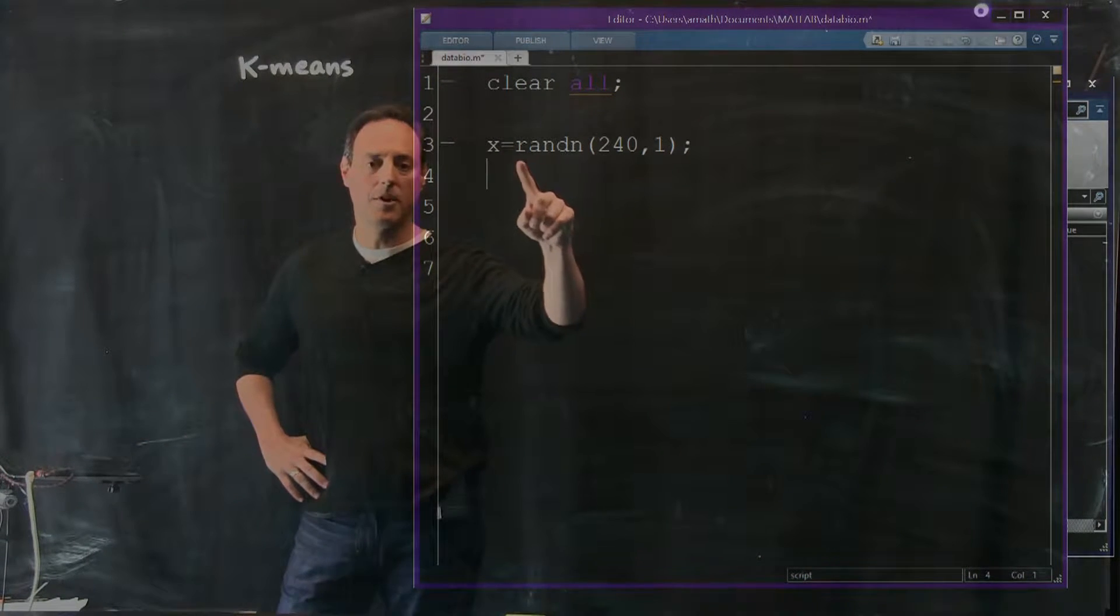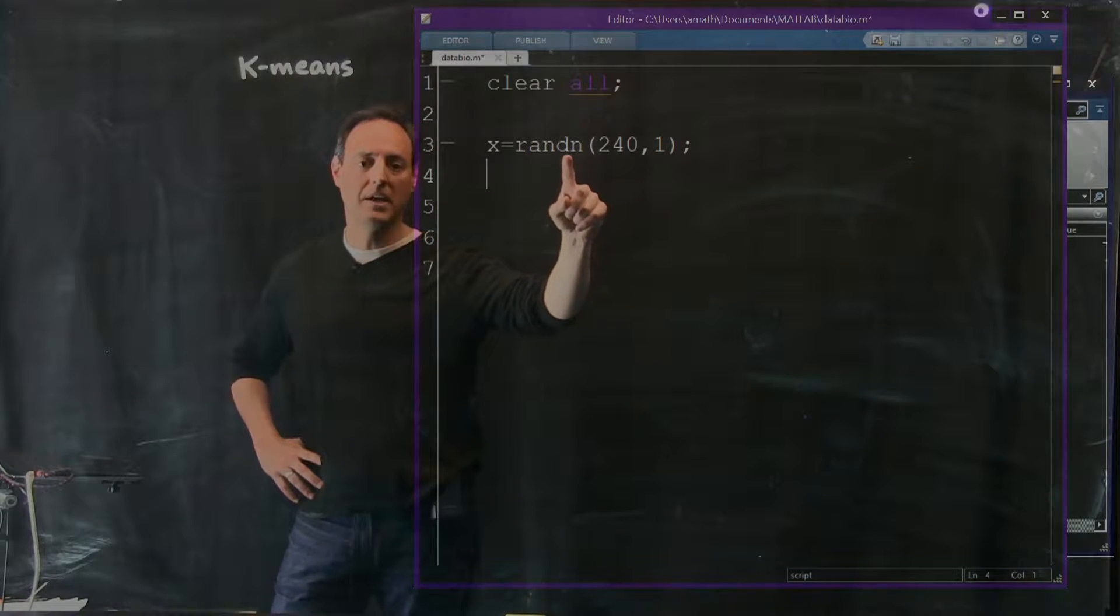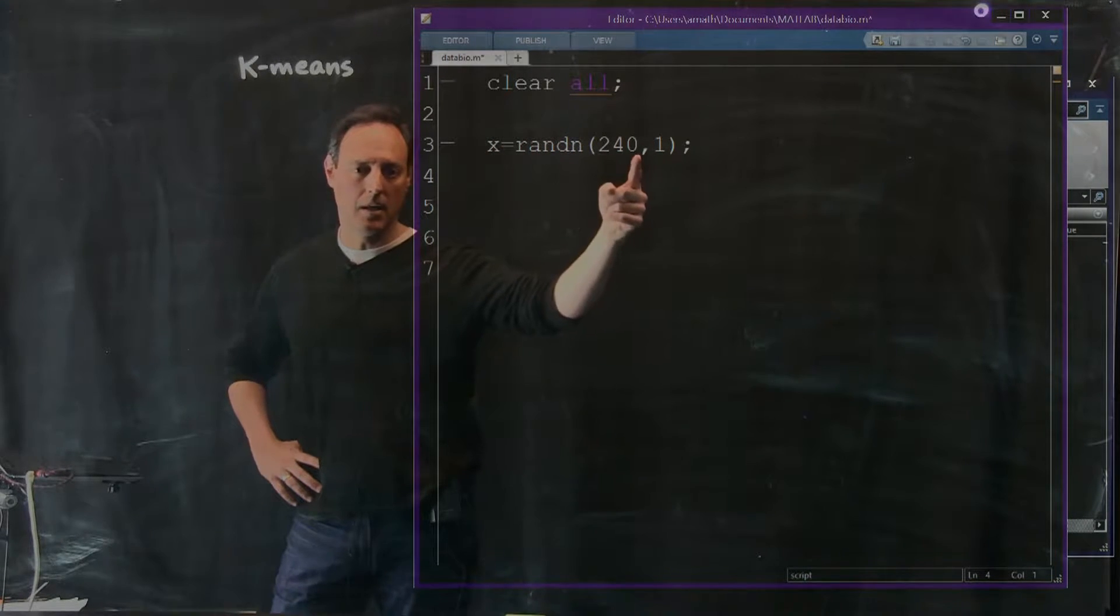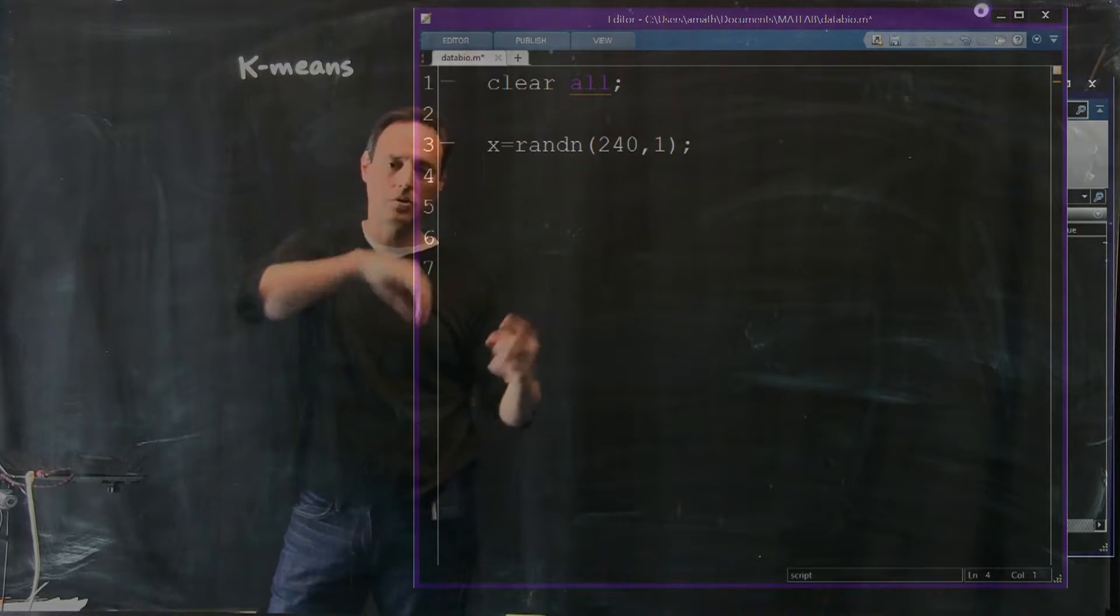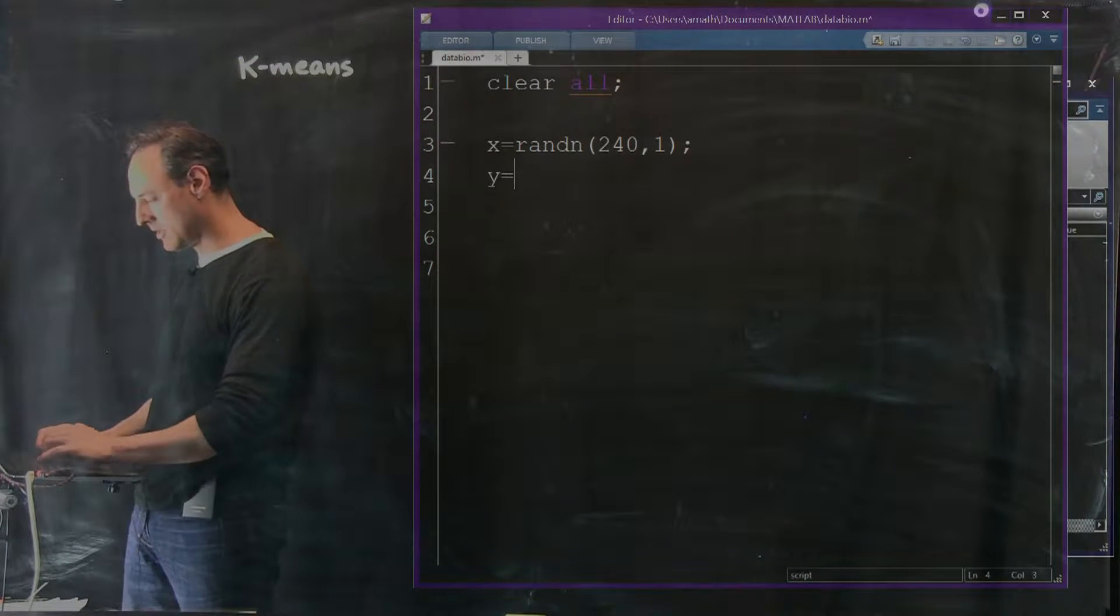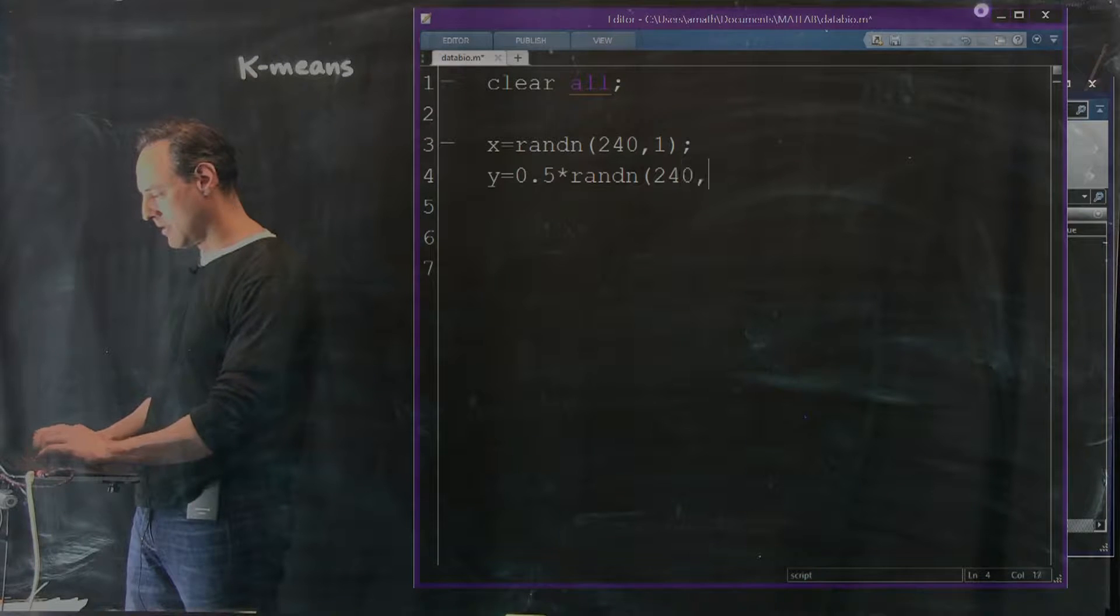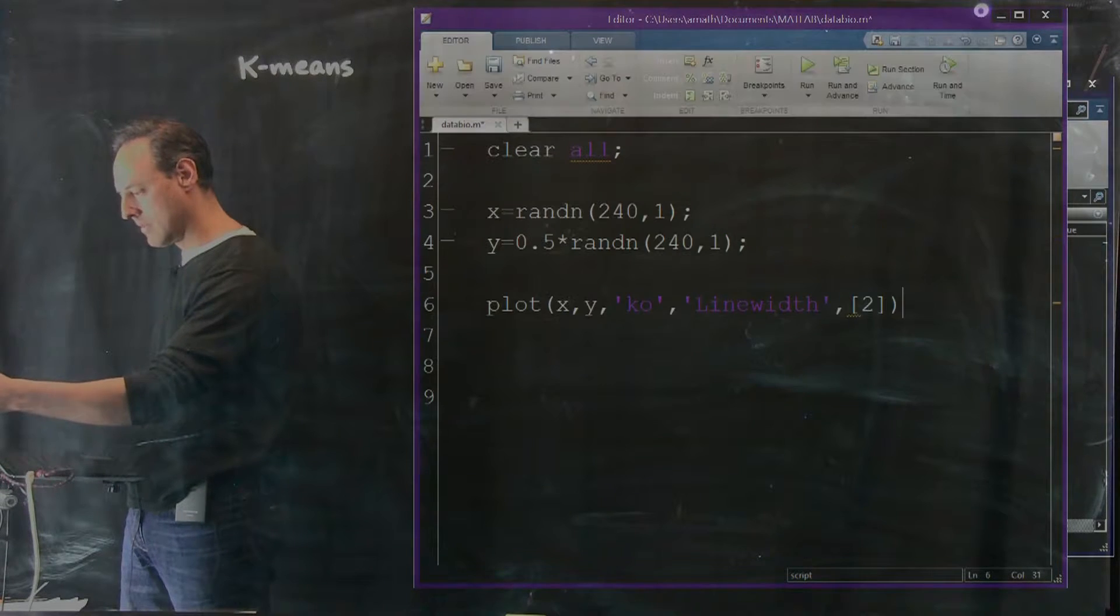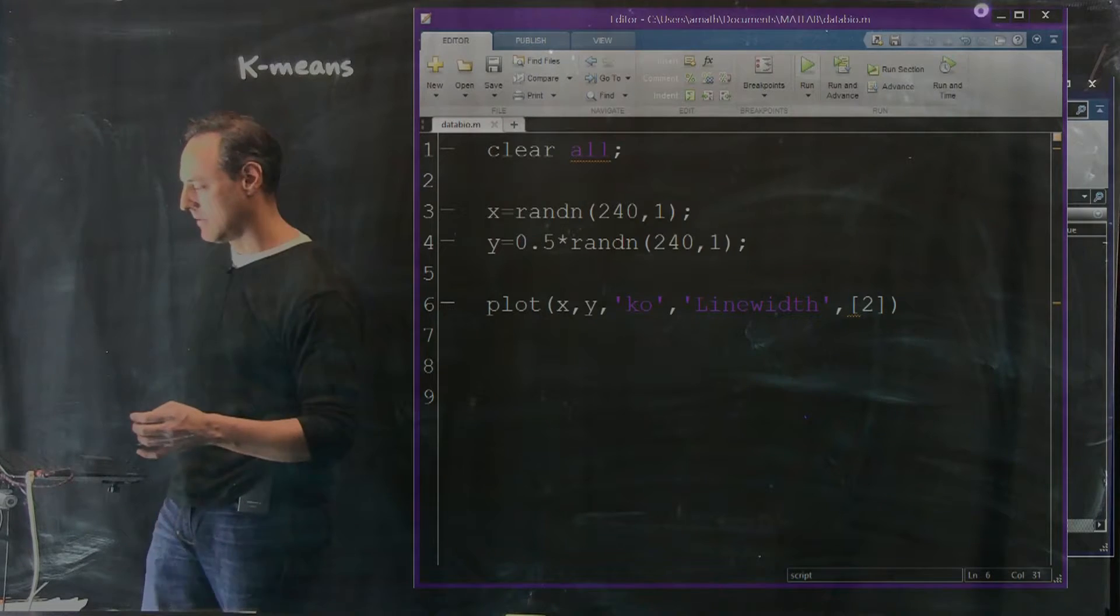We'll do this by first constructing some data. I'm going to make up some random variables that are Gaussian distributed. So I'm going to say x is equal to randn. This makes basically a Gaussian distributed random variable with mean zero and unit variance. I have 240 points, lined up into a vector of 240 rows, one column.